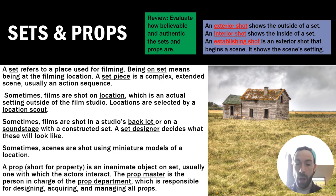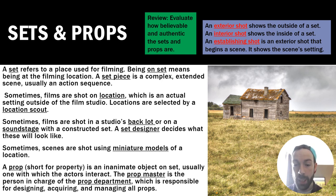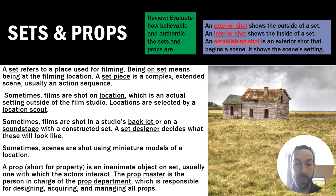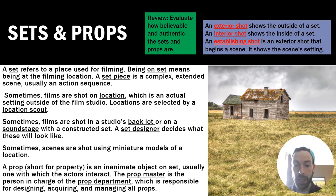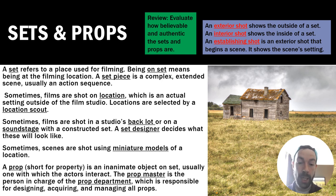Sometimes films are shot in a studio's back lot — every studio has a bit of space for filming. You can build sets on the back lot and shoot there because it's less expensive, though it won't look as authentic as being on location. You can also shoot on a soundstage, which is inside a building with a constructed set. A set designer decides what the sets will look like, and then construction workers and carpenters build the sets for the film.